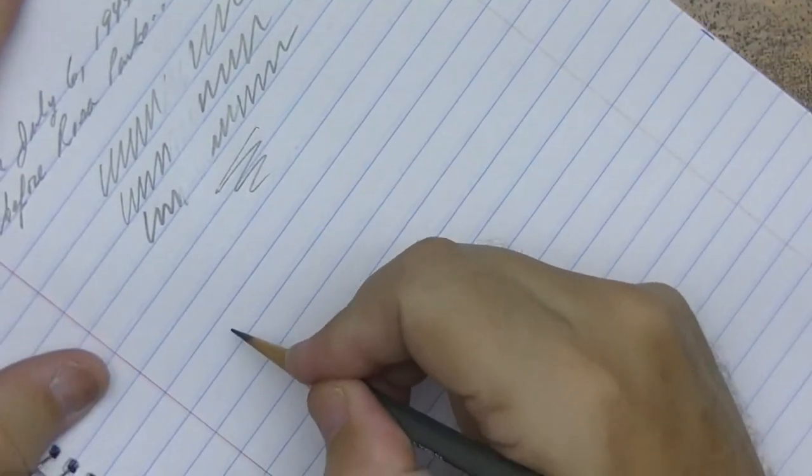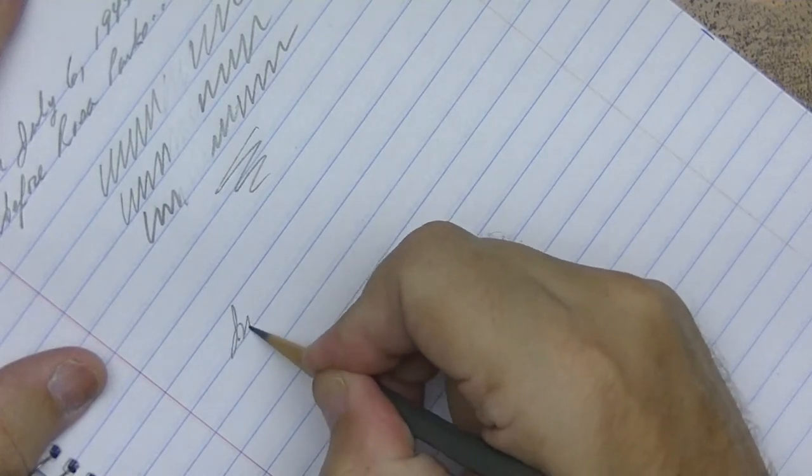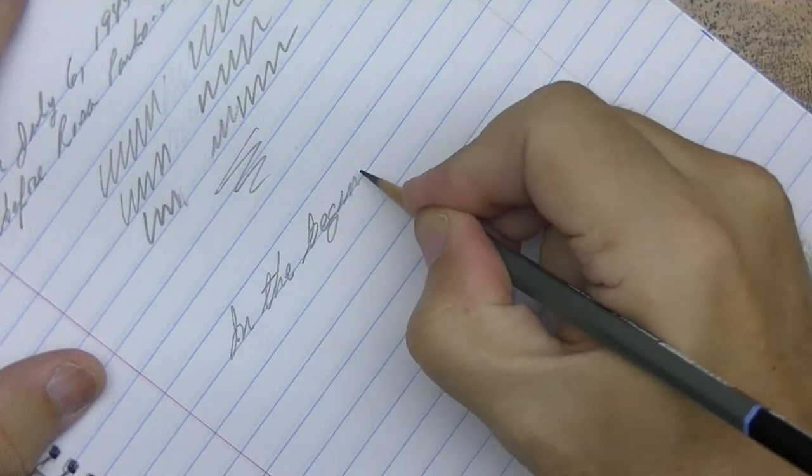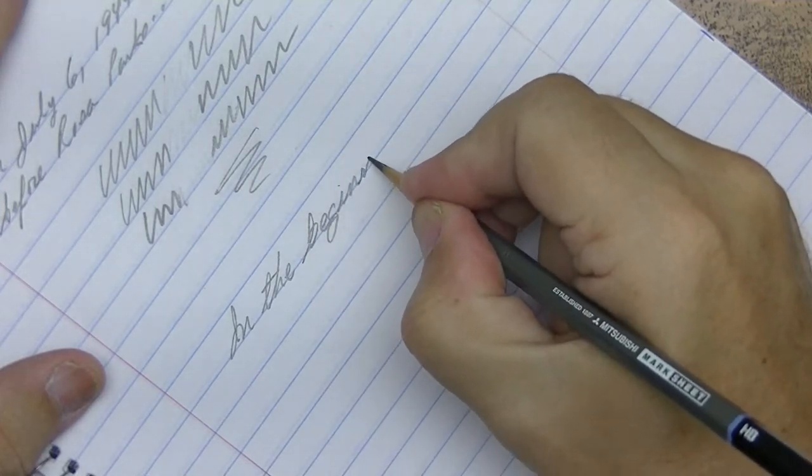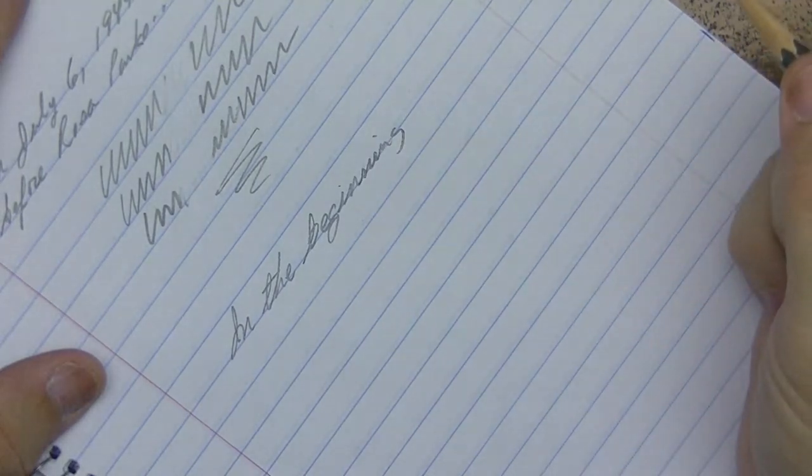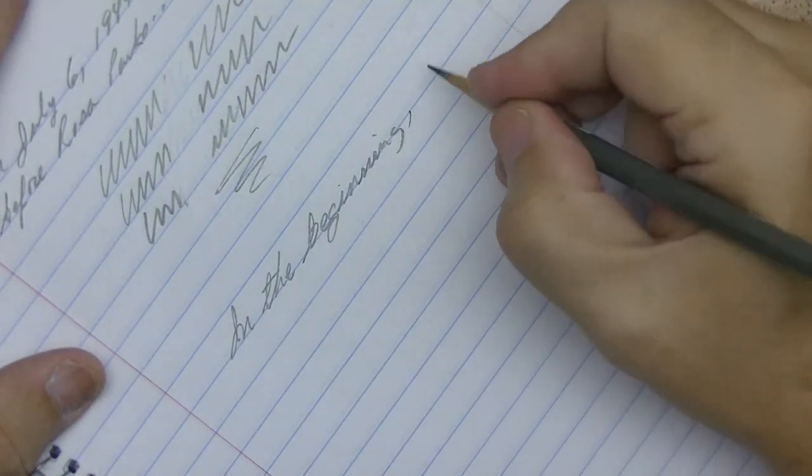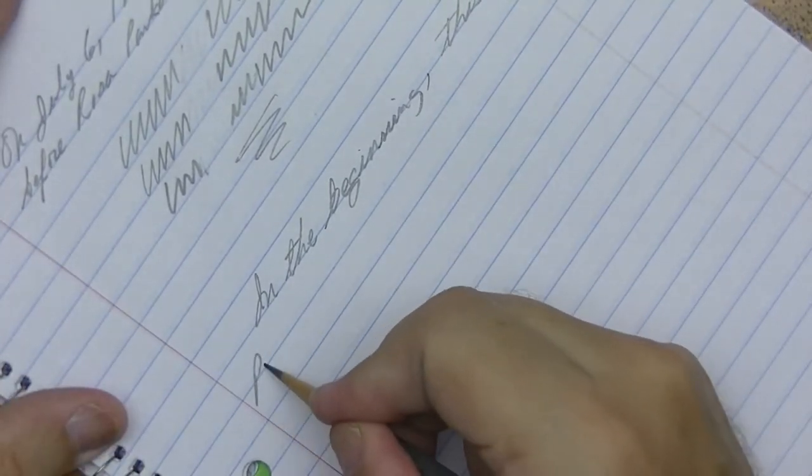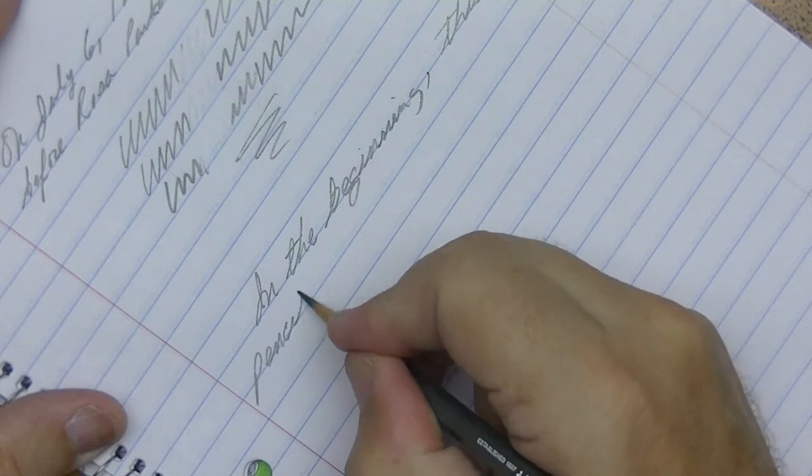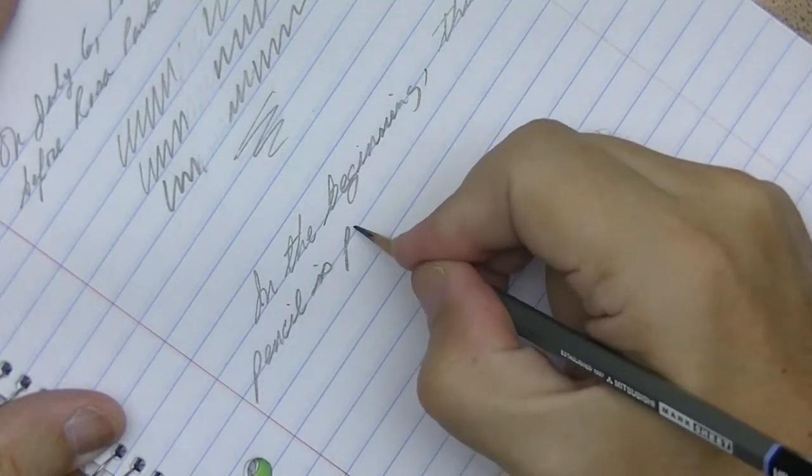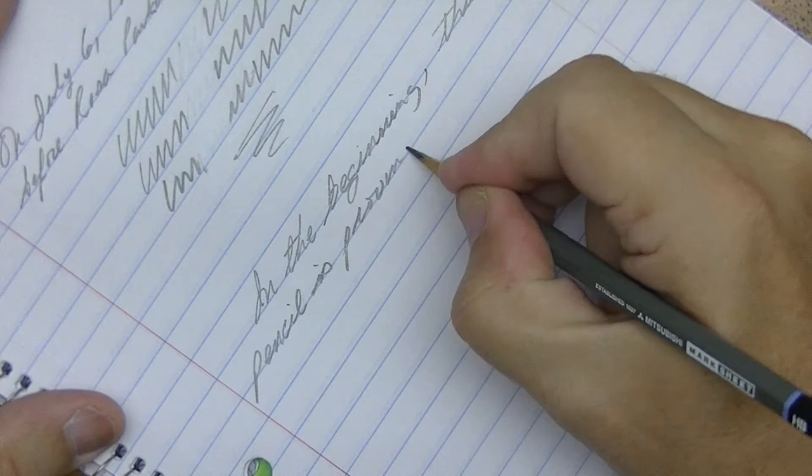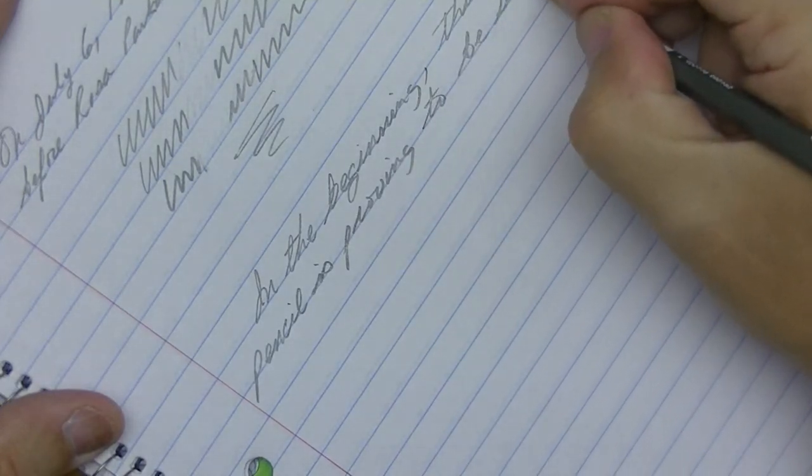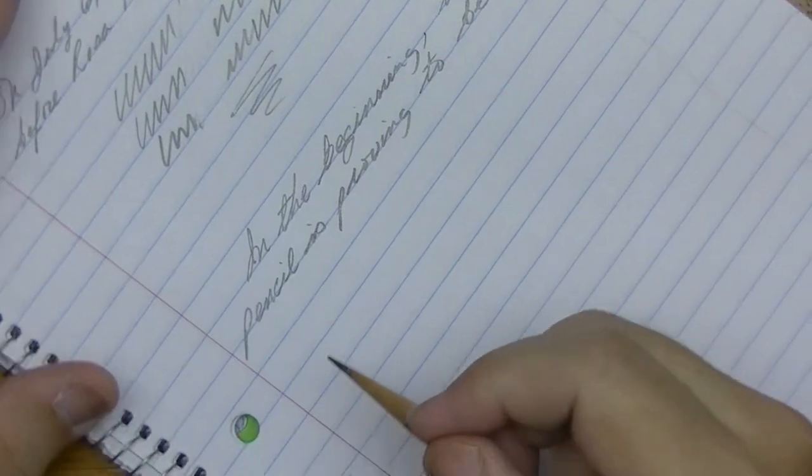So let's go ahead and I'm going to write something down here. Probably a bunch of gibberish. I don't know. Whatever comes to mind. And I want to kind of get a feel for how smooth it is, how dark it is. And we'll go from there. Okay. In the beginning. This pencil is proving to be smooth.